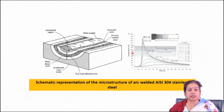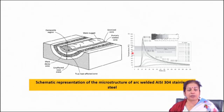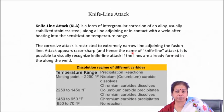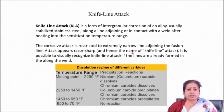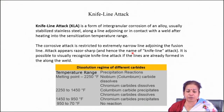Another way to solve the problem is by adding micro-alloying elements like columbium (niobium) or titanium. These elements are very prone to form carbides, and their free energy of carbide formation is much lower than that of chromium carbide. As a result, there is no possibility of chromium carbide precipitation, because columbium carbide and titanium carbide remain in the matrix, leaving no free carbon available for chromium carbide formation during arc welding.